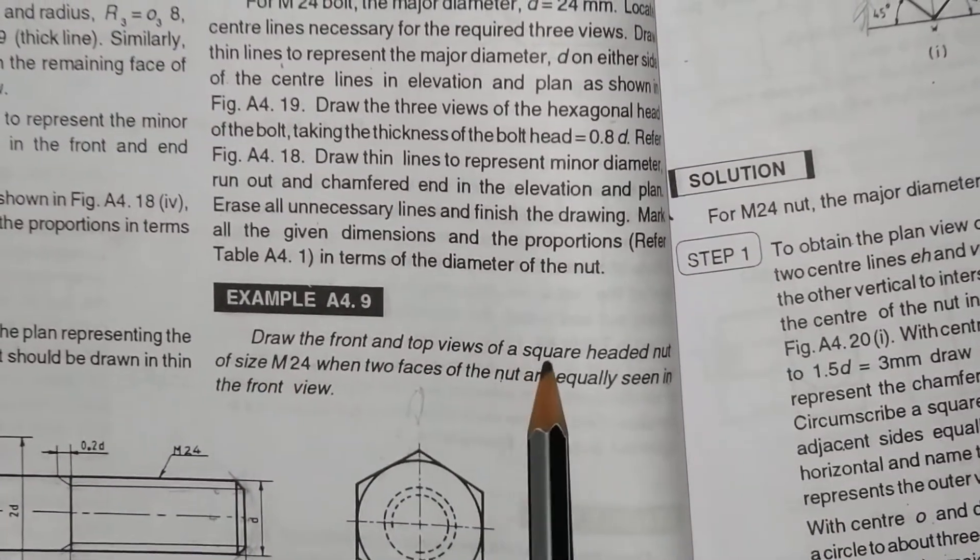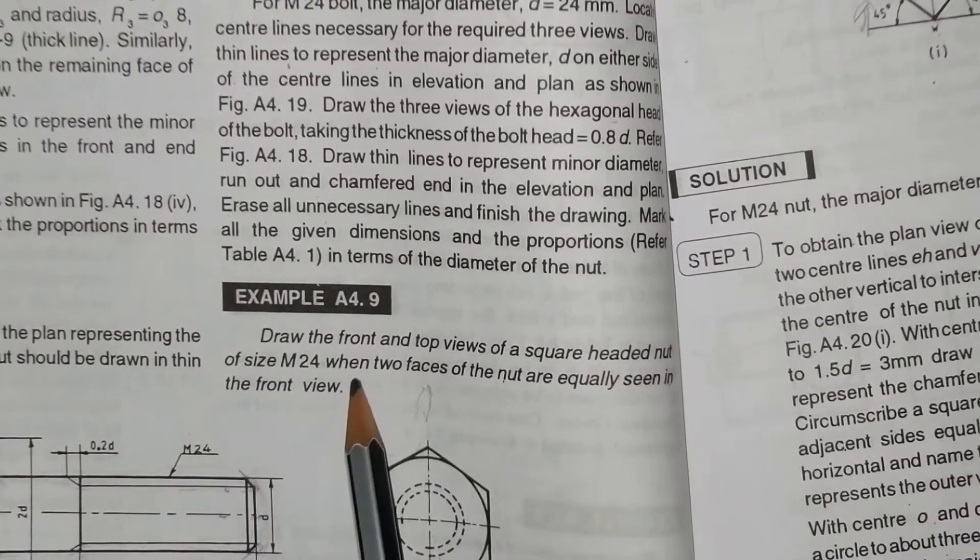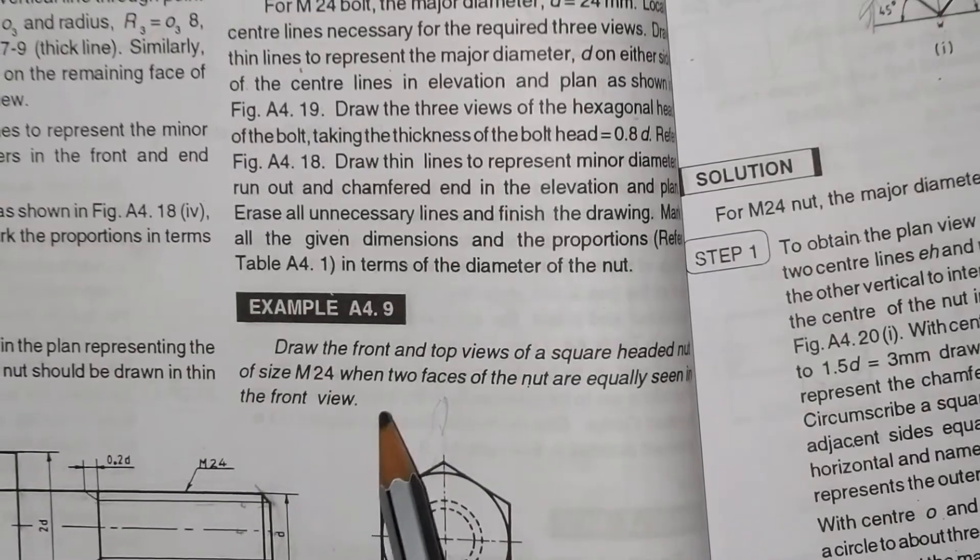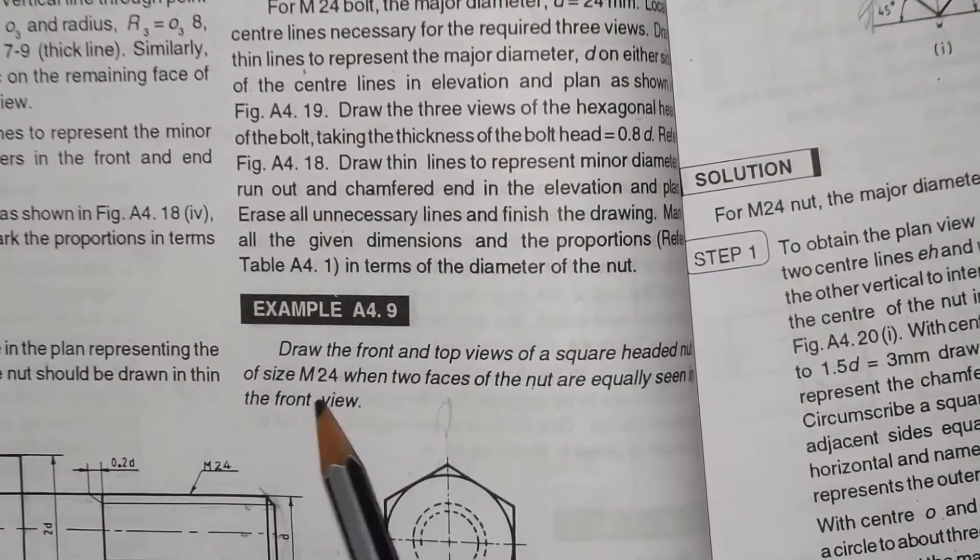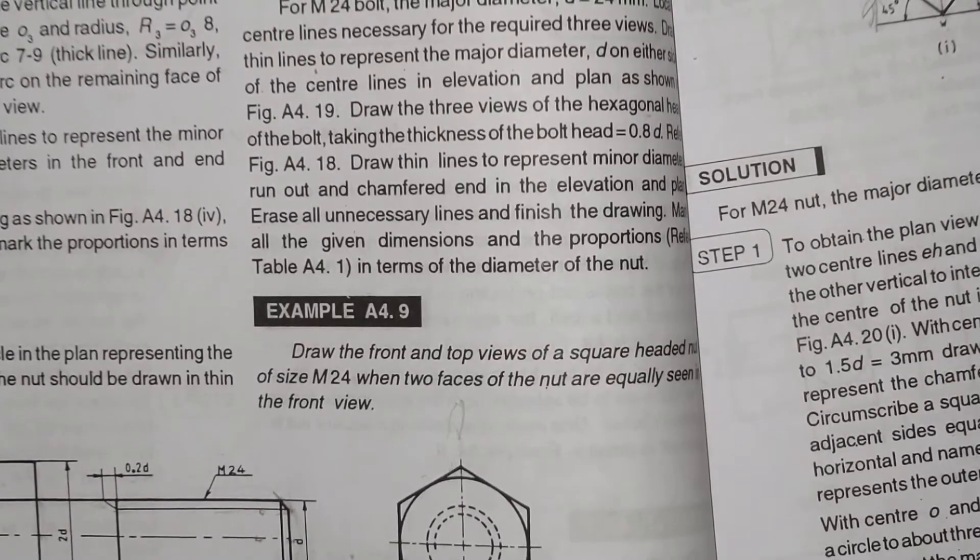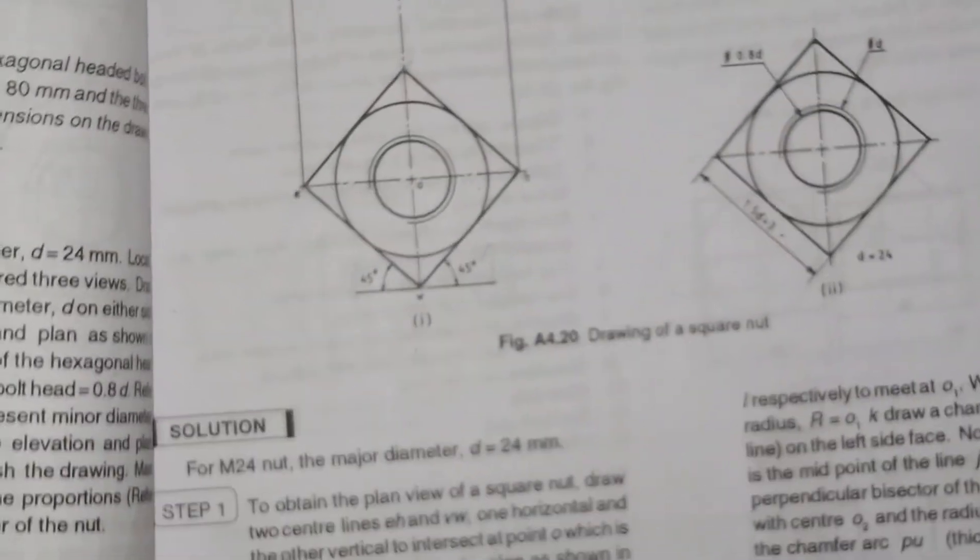Draw the front and top view of a square headed nut of size M24 when two faces of the nut are equally seen in the front view. The front view of a square headed nut is equally seen in the front view.